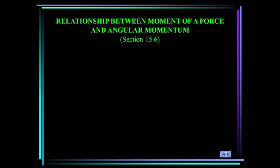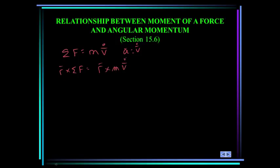Now we're going to talk about the relationship between the moment of a force and angular momentum. From the previous section, the summation of the forces is equal to the mass times V-dot — that's Newton's equation of motion, where the acceleration equals V-dot. If I take the cross product on both sides with R, I get R cross the summation of forces equals R cross MV-dot. This term on the left is nothing other than the summation of moments about O. Let's take a closer look at the right-hand term by going back to the definition of angular momentum.